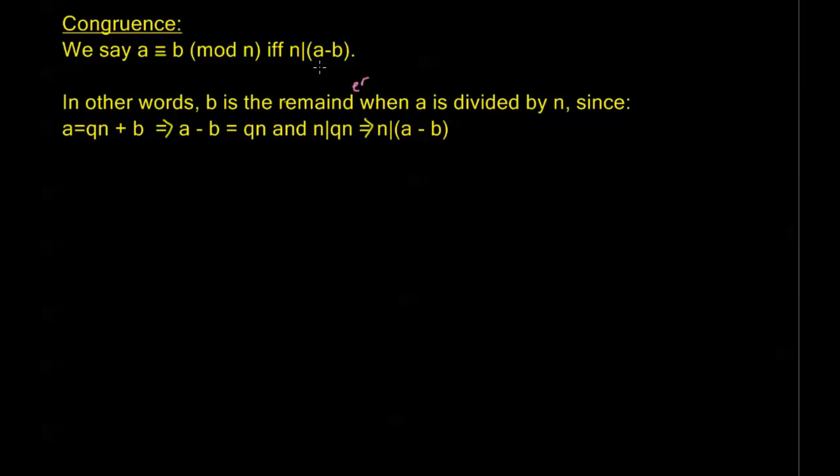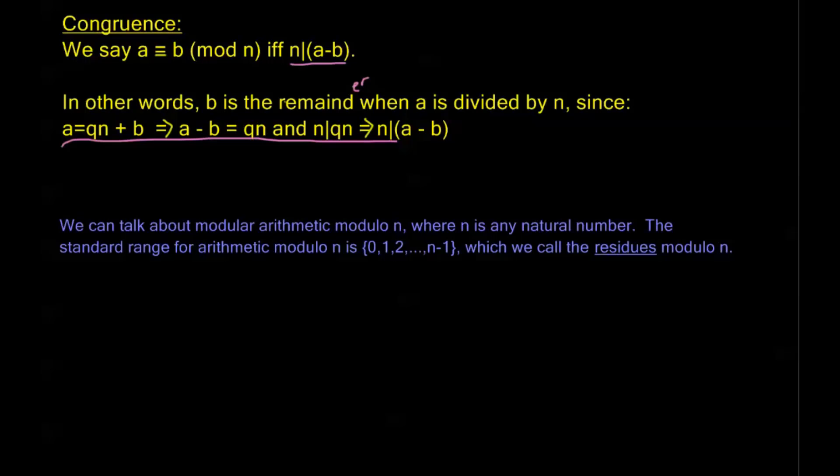Now that's a way to find the unique congruence that we're going to call the residue, but of course the congruence is going to be any number that satisfies this criteria. This just gives us one specific number that satisfies this criteria. But that's the one that we're going to be most concerned with. Now we can talk about modular arithmetic modulo n, where n is any natural number. The standard range for arithmetic modulo n is going to be the set 0, 1, 2, all the way to n minus 1, and we call these the residues modulo n. So if we think of a congruent to b mod n in this way here with the division, this division is always going to give us the b that is in the residues mod n. And this is where we want our congruences to end up.